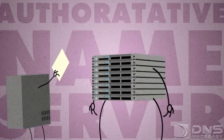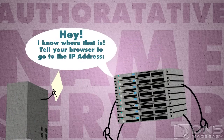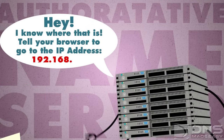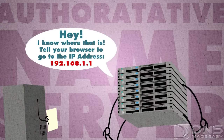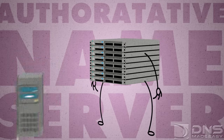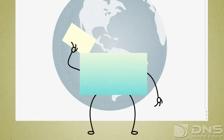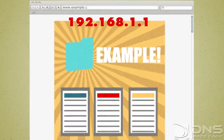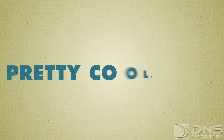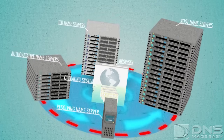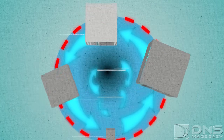At this point, the authoritative name server will say, "Hey, I know where that is! Tell your browser to go to the IP address 192.168.1.1." The resolving name server takes this information from the authoritative name server, puts it in cache, and gives a reply to the operating system. The operating system then gives this to the browser, and the browser then makes a connection to the IP address requesting the webpage for www.example.com. Pretty cool, huh? While the process seems complex — and believe me, it is — this whole cycle takes less time than it takes you to blink an eye.